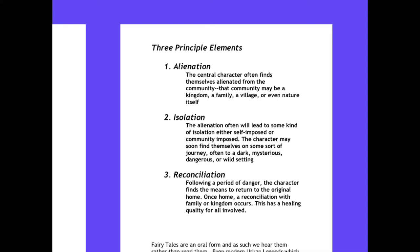That community might include the village, the little church community, or the family — an important one to keep in mind. In some rare fairy tales, the hero or heroine is part of the natural system but finds themselves alienated from it. The second principle is isolation. The character is pointed out as being different from those around them, and this leads to isolation from the community — whether the family, the church, the village, or nature itself. That alienation will sometimes be self-imposed, where the character decides on their own that they need to leave.